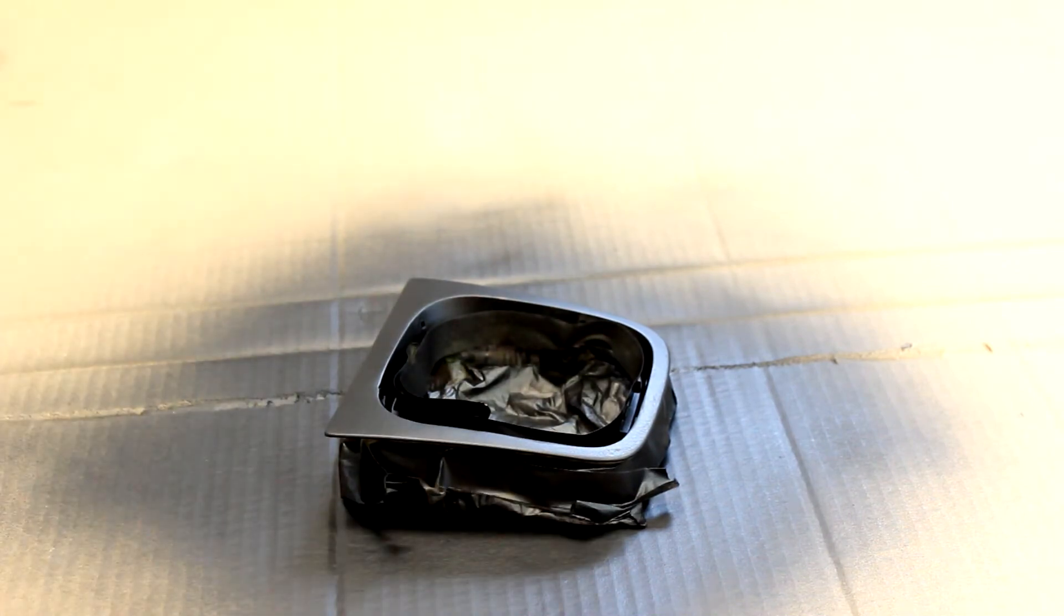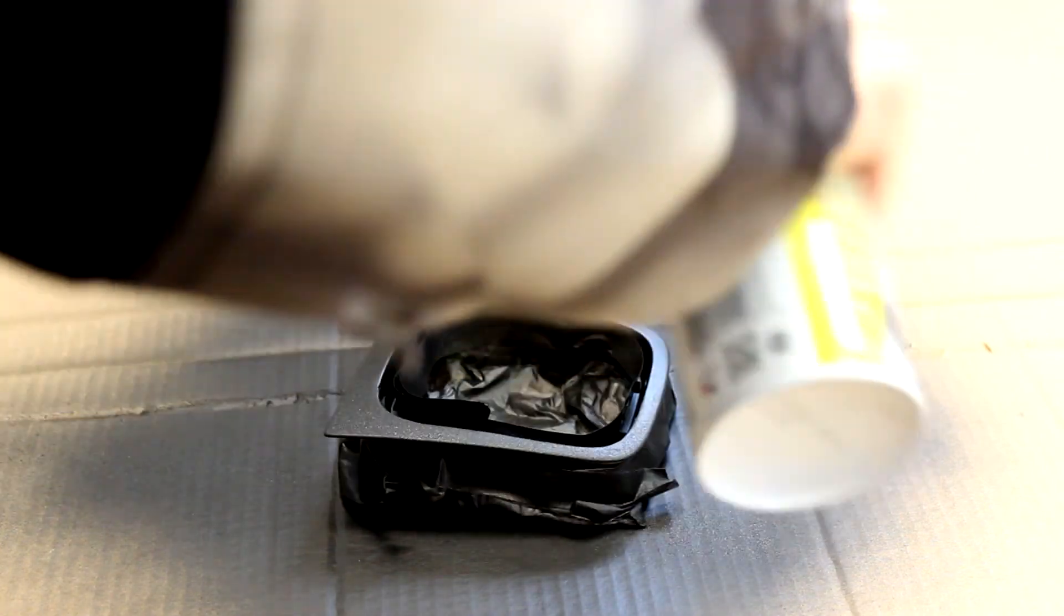With my plasti-dip, I did a bunch of coats to make sure that there was a lot built up. This helped hide the transitions between the epoxy and the trim even more.